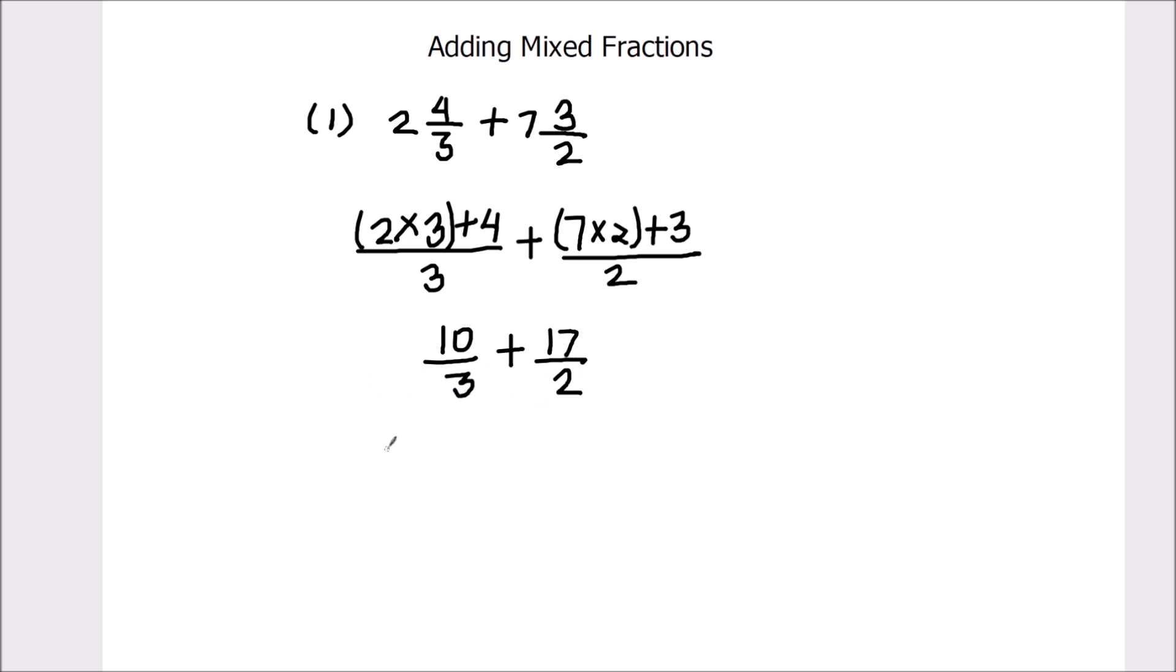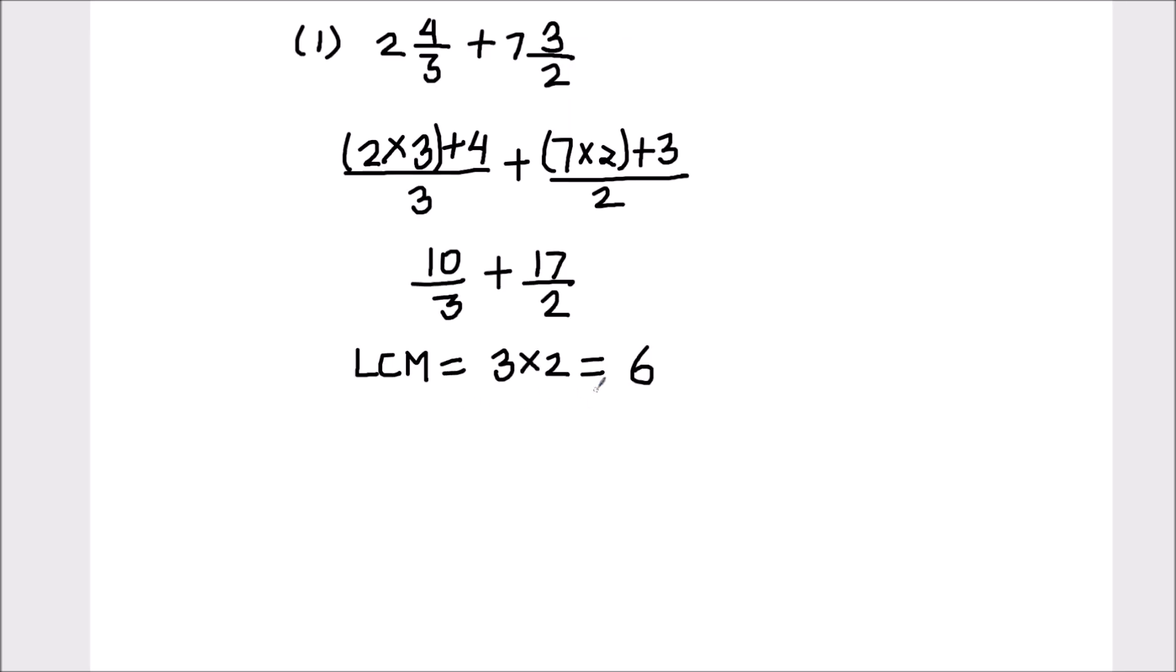Now we will add the 2 fractions. To add the 2 fractions, we will take the LCM of the denominators. LCM will be 3 times 2 because 3 and 2 both are prime numbers. There is no common factor between them, so the LCM is 6. So we have to make the denominators of both these fractions 6.